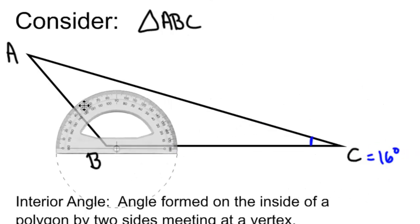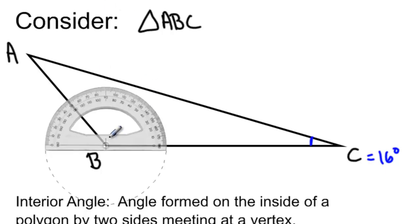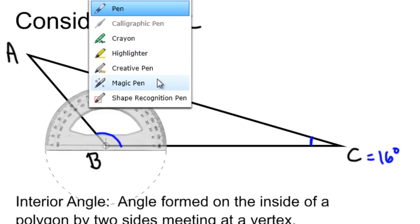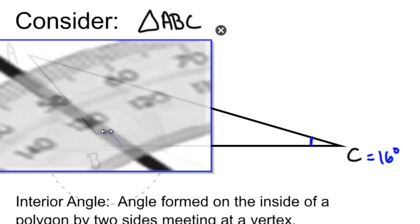Next, I'll measure angle B. Angle B is a larger angle. And when I use my protractor to measure angle B, it looks about 130 degrees.